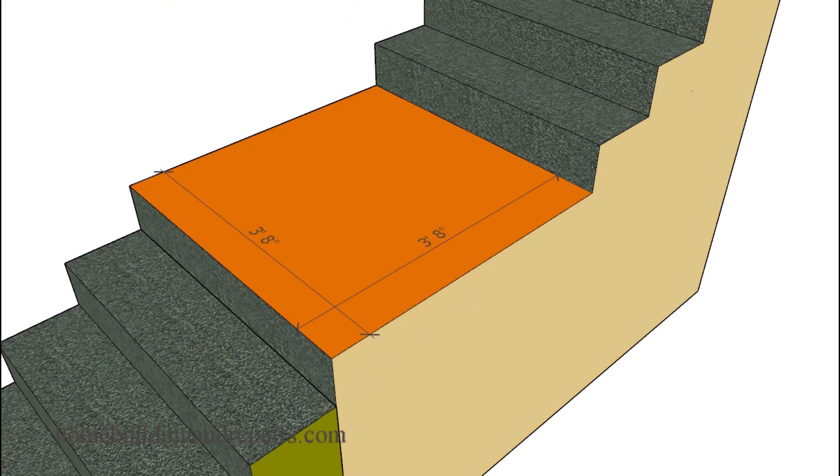A landing, according to the International Building Codebook, should have the same depth as the width, or at the very least, 36 inches for a residential stairway, or 44 inches for a stairway with over 50 occupants in the building.